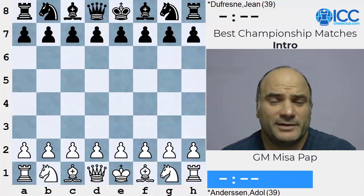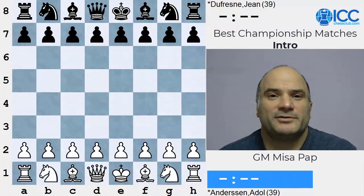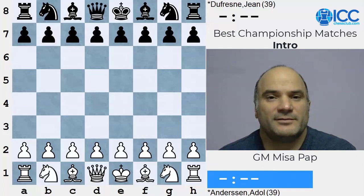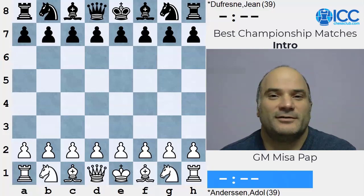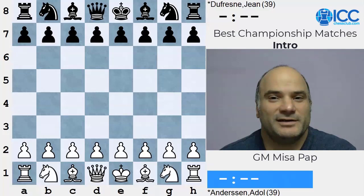Why is this important? Why am I mentioning this? Because later, when Andersen appeared on the chess scene in the 1850s and after 1862 when he was considered the best player in the world, when they asked him how he learned to play chess - because back in those times there was no computer, no internet, and it wasn't easy to find a chess magazine or books - he said he learned a lot from the book about the Labourdonnais-Macdonald match. So the famous Adolf Andersen learned a great deal from that book.